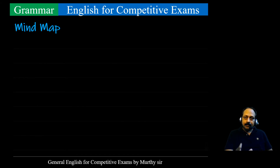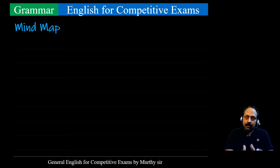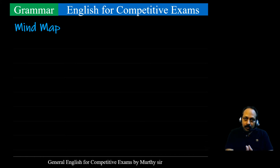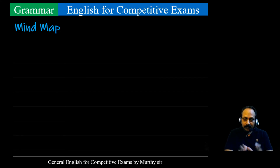That is the introduction. The topic is degrees of comparison. Adjectives and adverbs change their form to show comparisons, and these are known as degrees of comparison — three in number: positive, comparative, superlative. Positive expresses a quality with no comparison. Comparative is used when we compare two things or persons, and we use the word 'than.' Superlative is used for more than two, and we use the definite article 'the.'